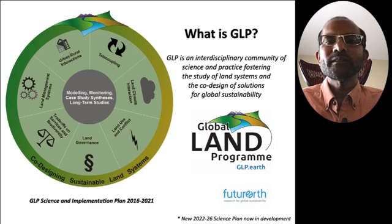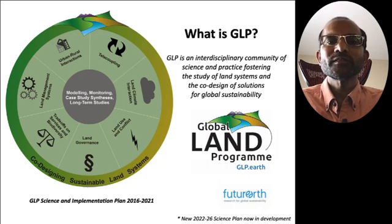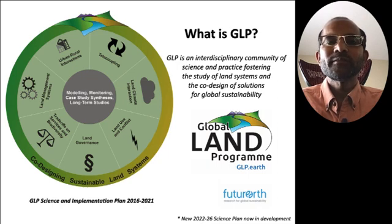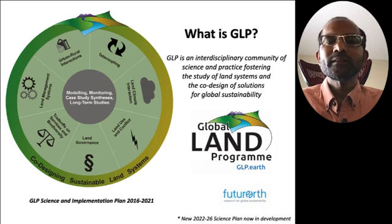So the keywords there are land systems, interdisciplinary, science and practice, and co-design of solutions. The wheel to the left shows a key figure from our science plan showing seven core areas of current focus: urban-rural interactions and telecoupling.